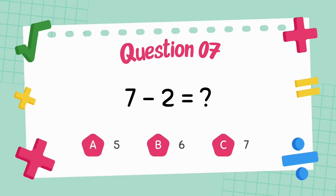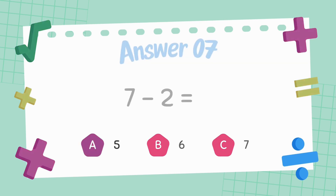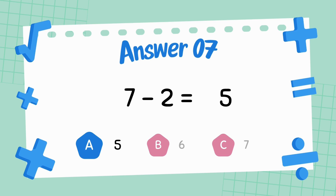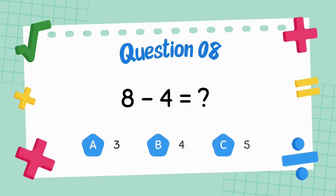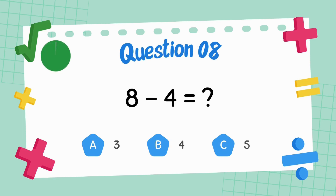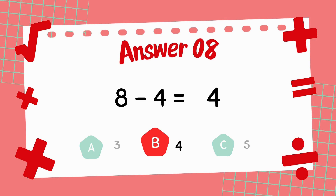What is 7 minus 2? The answer is 5. What is 8 minus 4? The answer is 4.